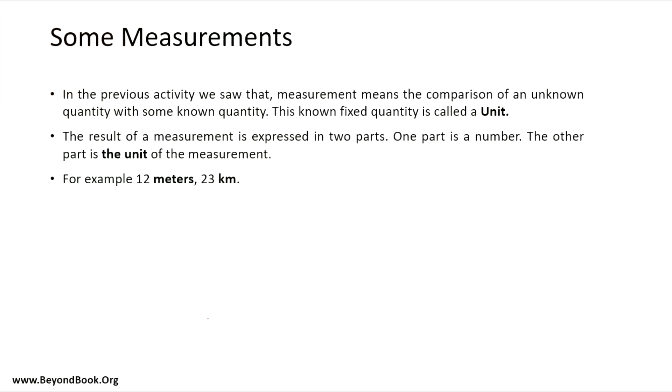In the previous activity, we were comparing unknown quantities, so it doesn't necessarily mean every child will have the same measurement for their table. It might be that Aryan has a different measurement and Rohan has a different one. We are comparing unknown quantities with some known quantities. This known fixed quantity is called the unit. The result of measurement is expressed in two parts: the number part and the unit. For example, if my school is three kilometers from my house, three is the number and kilometer is the unit.